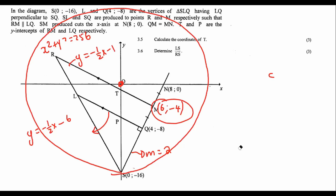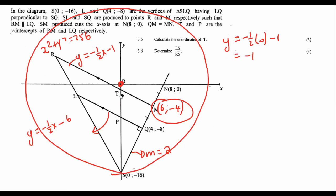To find the value of c, plug in the coordinate (6, −4). So y = −½x + c, plug in (6, −4): −4 = −3 + c, so c = −1. That gives us the equation of MR: y = −½x − 1. To find the coordinates of T, that's just the y-intercept — make x = 0, and you get −1. So the coordinates of T are (0, −1).